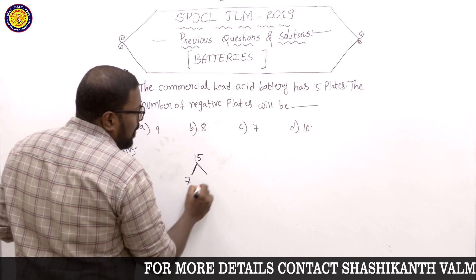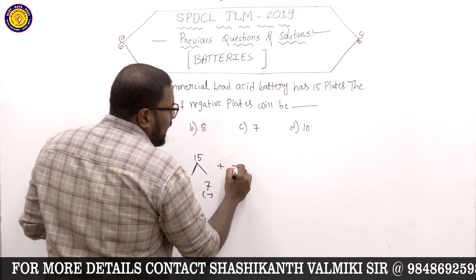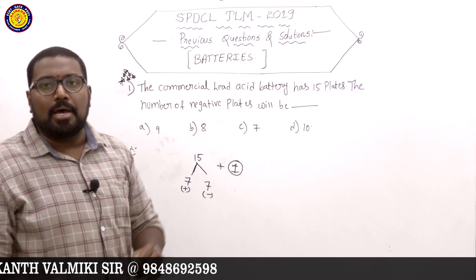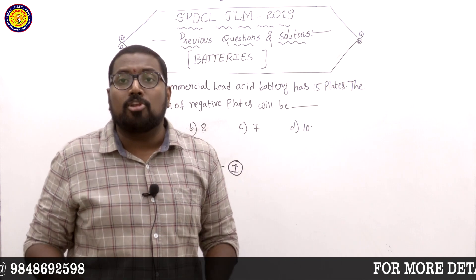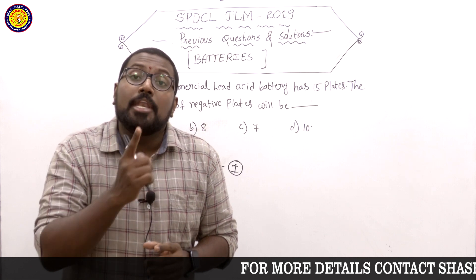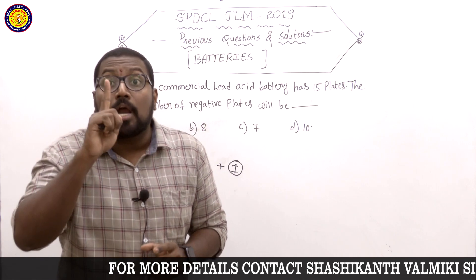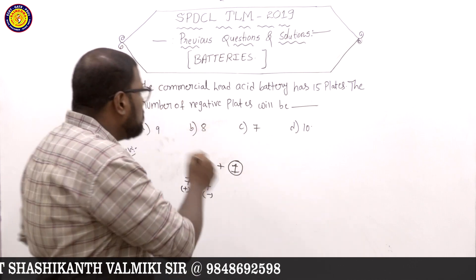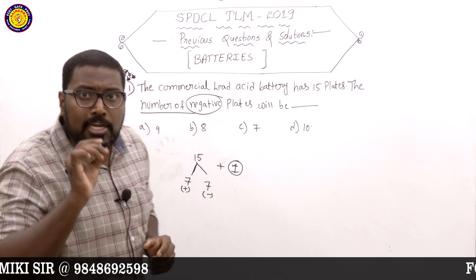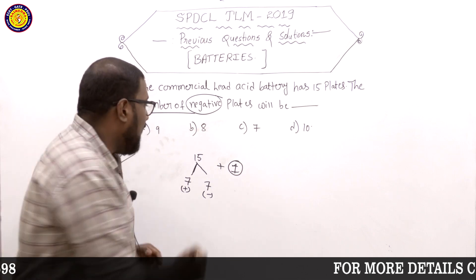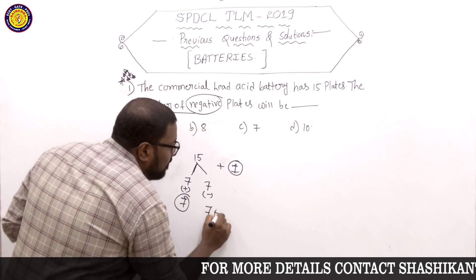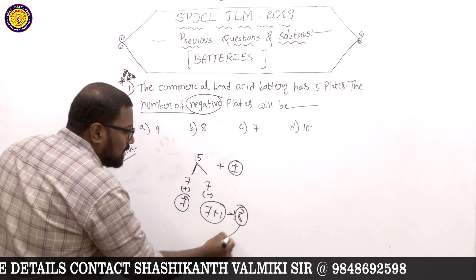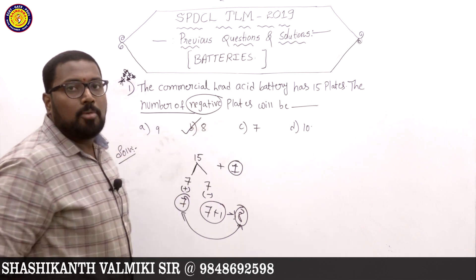If we split 15 plates equally, we get 7 positive and 7 negative. But with one extra plate added, positive plates are 7 and negative plates are 7 plus 1, which gives 8 negative plates. Total: 7 plus 8 equals 15 plates. So the answer is option B — 8 negative plates. Very easy but very important.